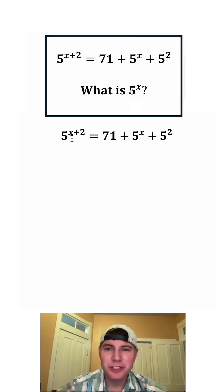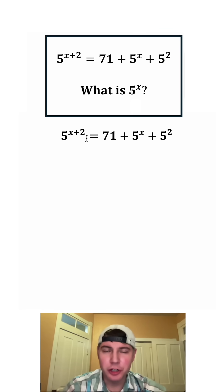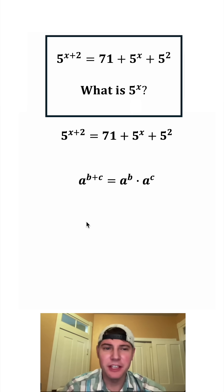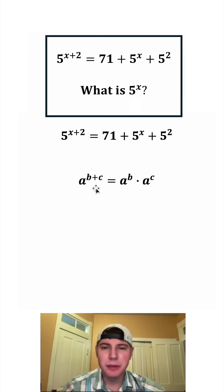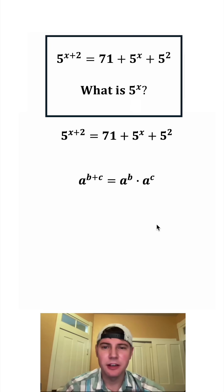First, I'm noticing in the exponent we have two terms being added. That reminds me of these notes right here. Anytime you have two terms being added in an exponent, you can split it up like this: a to the b plus c can be rewritten as a to the b times a to the c.